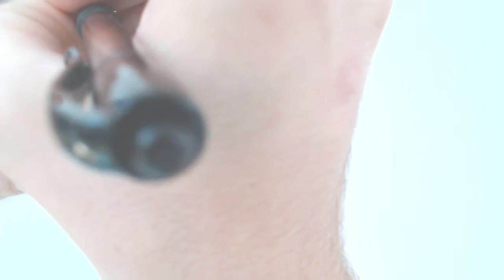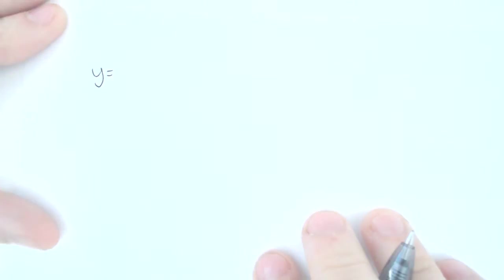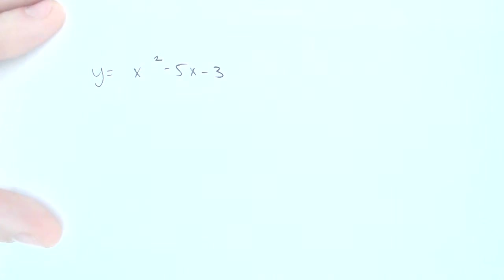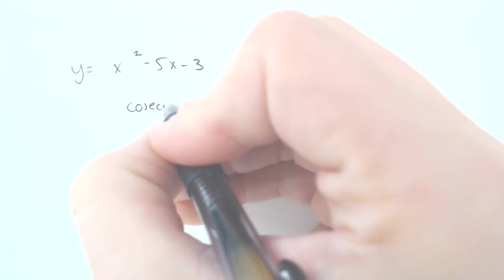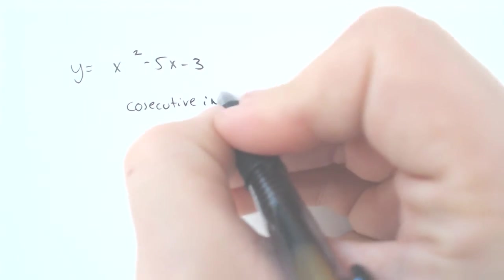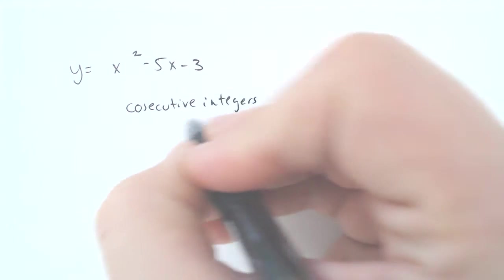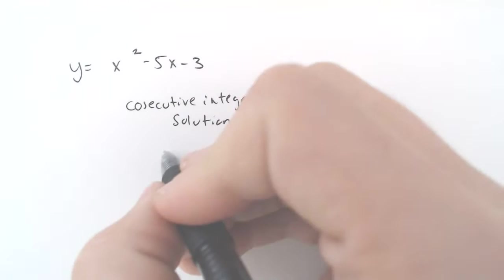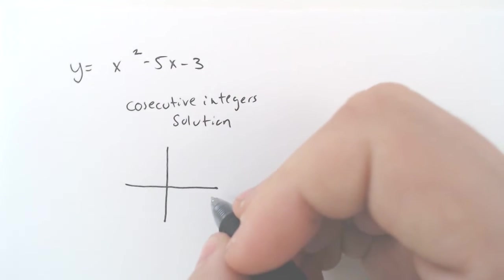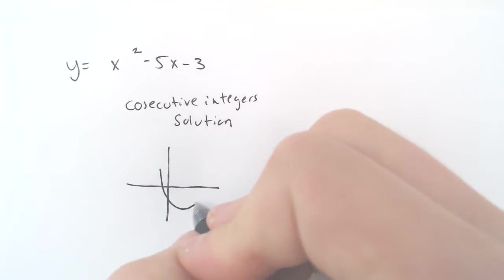The first thing we got is if you have y equals x squared minus 5x minus 3, if I wanted you to solve by finding the consecutive integers but not actually using the quadratic formula, you would need to type it in your graphing calculator if you wanted the consecutive integers for the solution. So you would type it in your graphing calculator, you would look at the two values and it would look something like this.